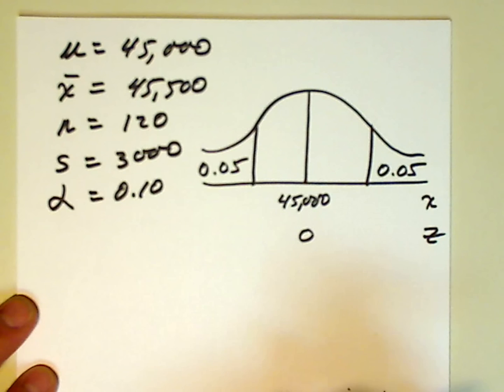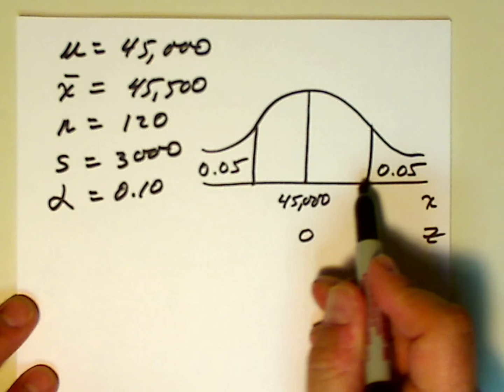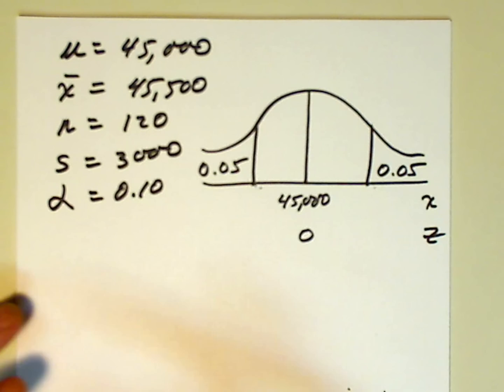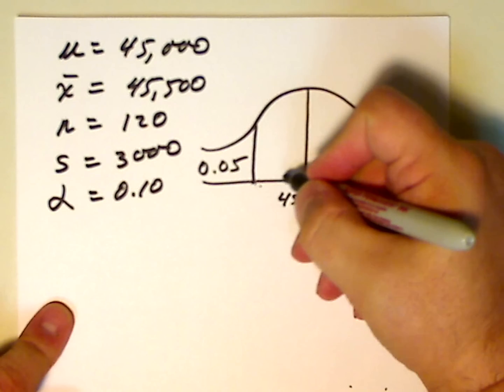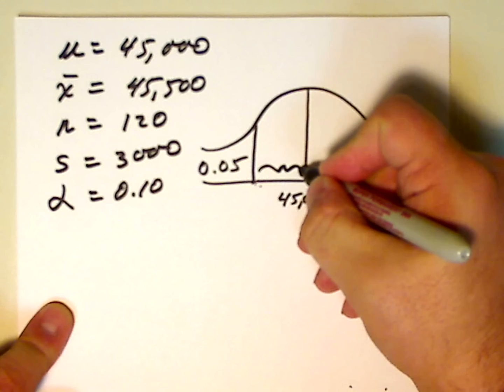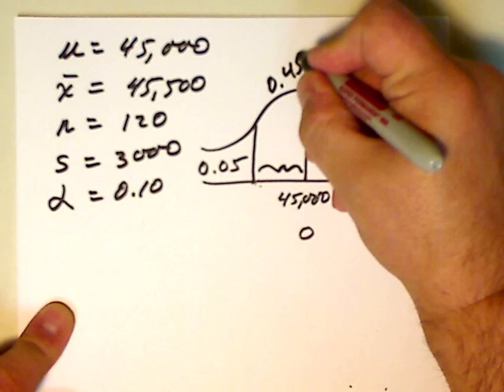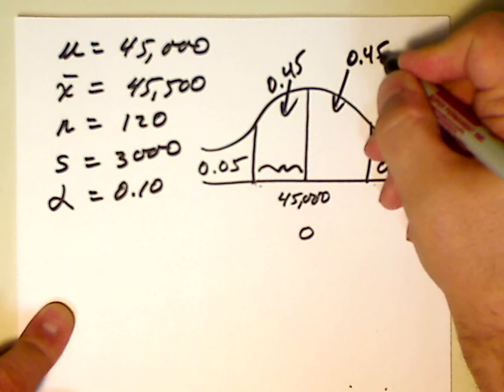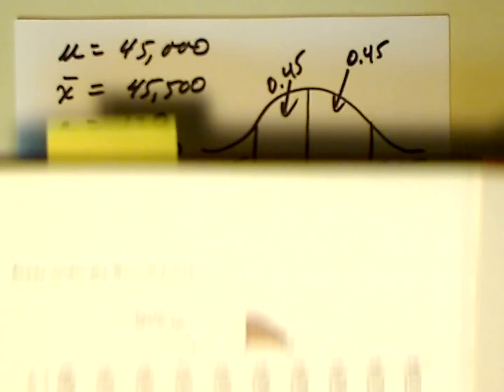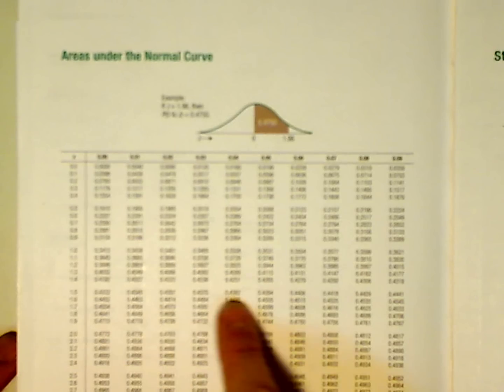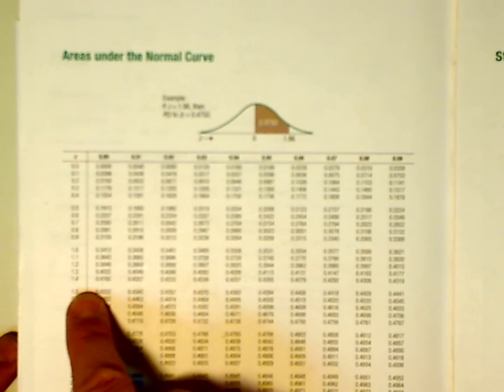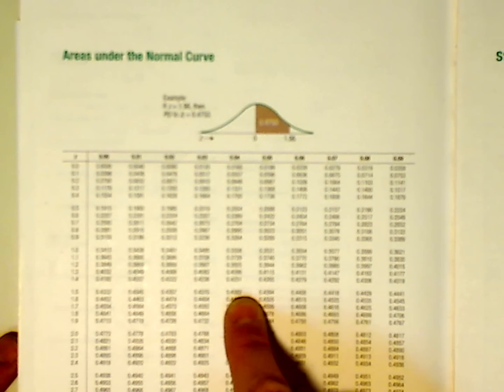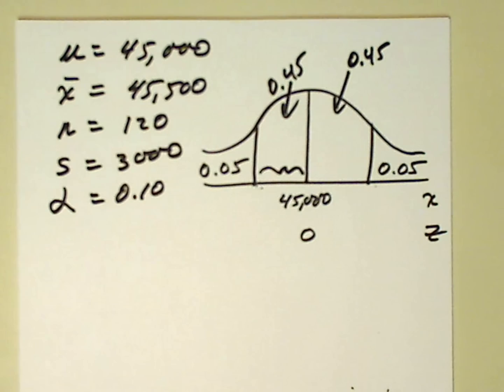Well, now we want, we've drawn our picture. Now, we want to find the critical values, the points associated with, the z values associated with these two points. Well, I'll show you two ways to do it. If we have 0.05 in the tail, this region must have 0.45 in it, and the same with this region. So, let's go to our book. We're going to look for 0.45, and if we do that, we see that lies between 0.4495 and 0.4505. So, we go down the z column to 1.6, and over to here, it's in between 0.04 and 0.05. So, it's 1.645.